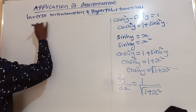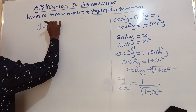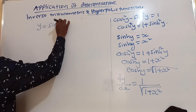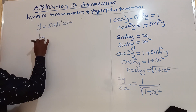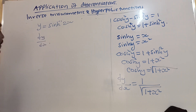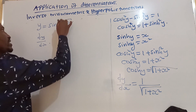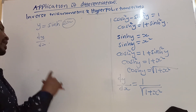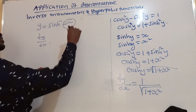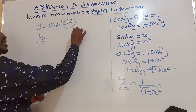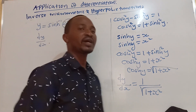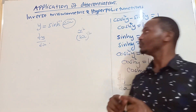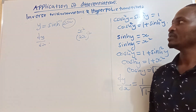Suppose now we have y = sine inverse 2x and we need to find dy/dx. We work directly in the same way, but wherever we used x, we now use 2x, and wherever we had x squared, we now have (2x)². All the working remains the same, just substituting 2x throughout.